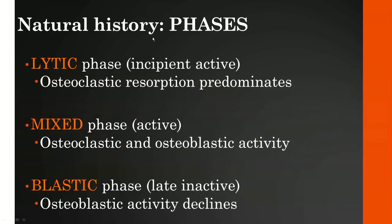The three phases are: first, the lytic phase—or incipient active phase—in which osteoclastic resorption predominates and hence you have lysis; second, the mixed phase—or active phase—where both osteoclastic and osteoblastic activity occur; and third, the blastic phase, which is later, proceeding to inactive disease, in which osteoblastic activity declines.